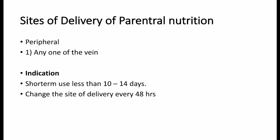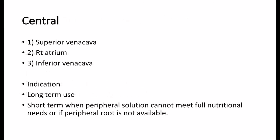Sites of delivery of parenteral nutrition: sites usually used are peripheral and central. Peripheral is given in any one of the veins; indication is short-term use, less than 10–14 days, with change of delivery site every 48 hours. Central sites — superior vena cava, right atrium, and inferior vena cava — are used for long-term use, or short-term when peripheral solution cannot meet full nutritional needs, or if the peripheral route is not available.